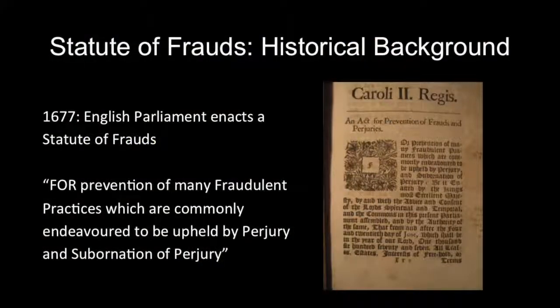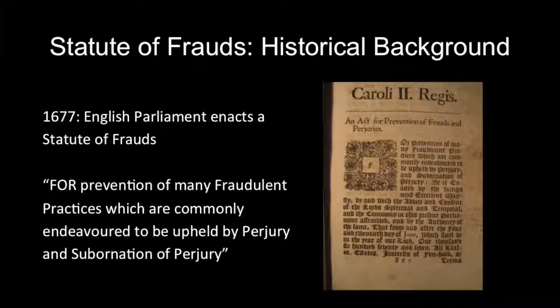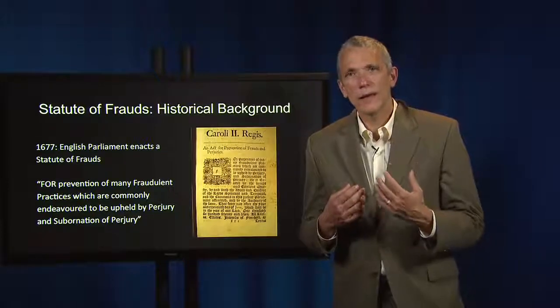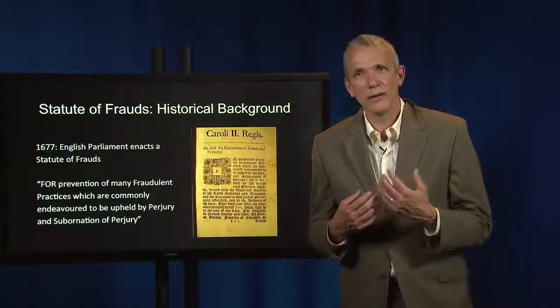Let's start with some historical background. In 1677, the English Parliament passed the precursor to the modern American statute of frauds. It was called an Act for Prevention of Frauds and Perjuries. The act was meant to prevent individuals from falsely claiming that another party had promised them something, and from then suing that party for breach of the alleged contract.